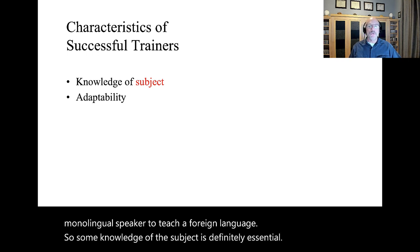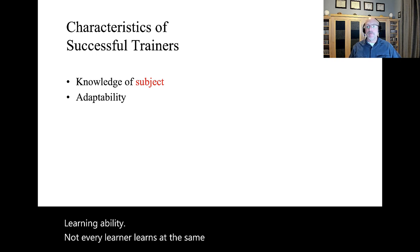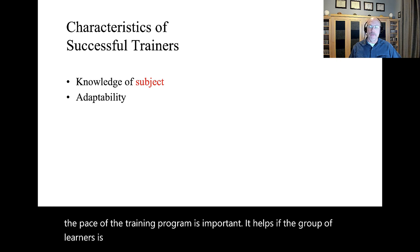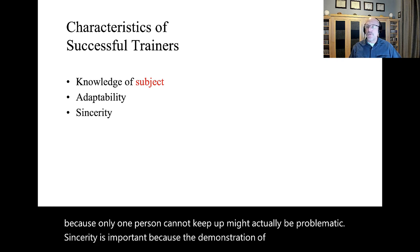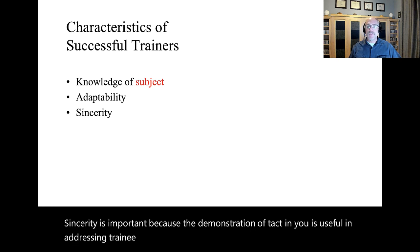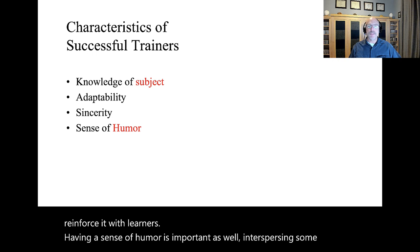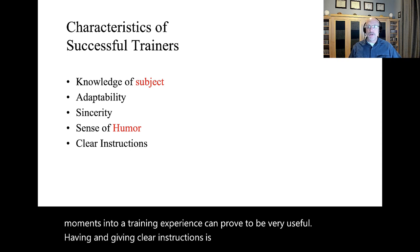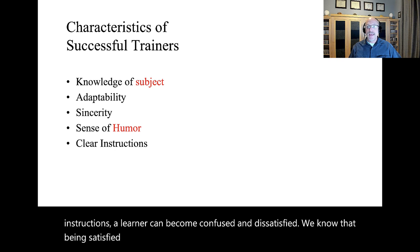Adaptability is the ability to alter the pace of learning for different trainees' learning ability. Not every learner learns at the same pace, so being able to fluidly control the pace of the training program is important. It helps if the group of learners is smaller rather than large for this, since slowing down 30 people because only one person cannot keep up might actually be problematic. Sincerity is important because the demonstration of tact is useful in addressing trainee concerns. Conveying the importance of the topic can reinforce it with learners. We know that being satisfied with the training experience helps learners learn more.